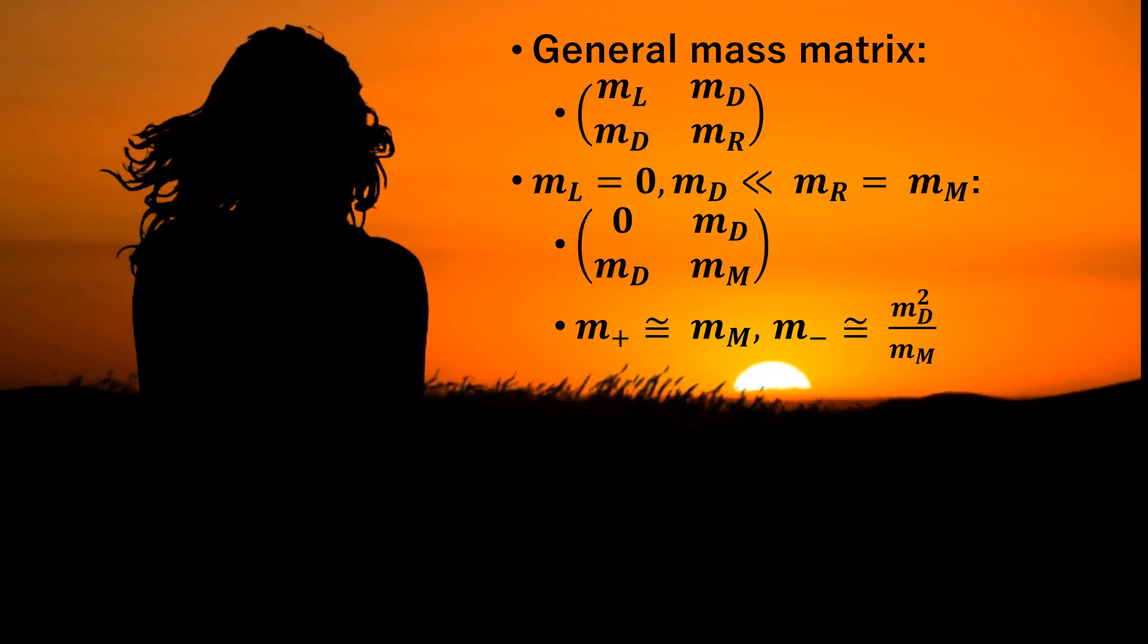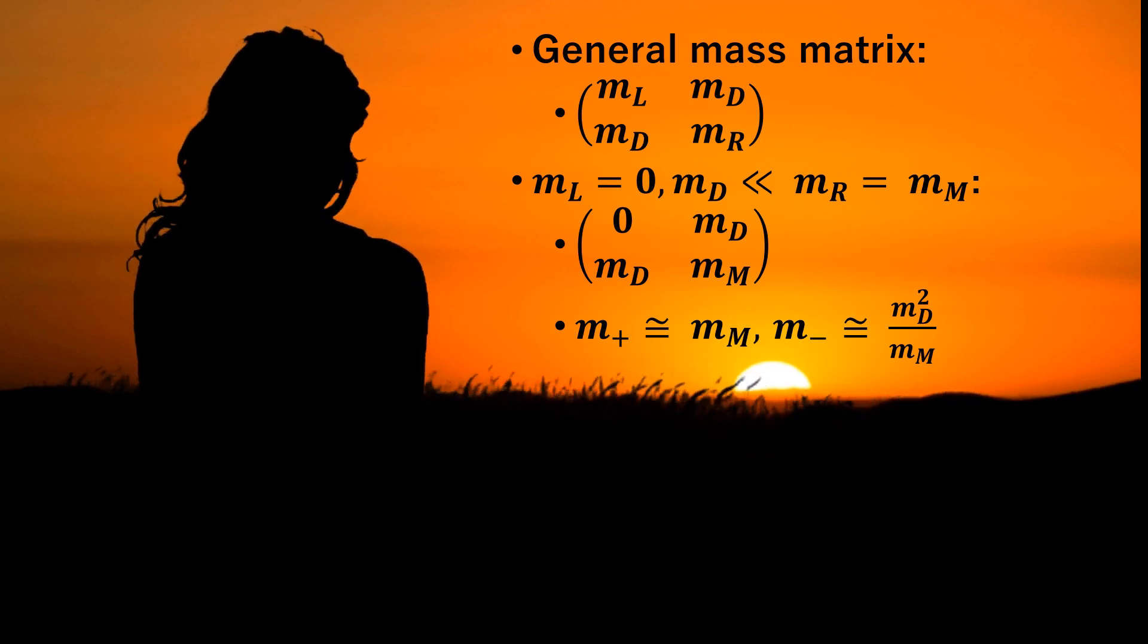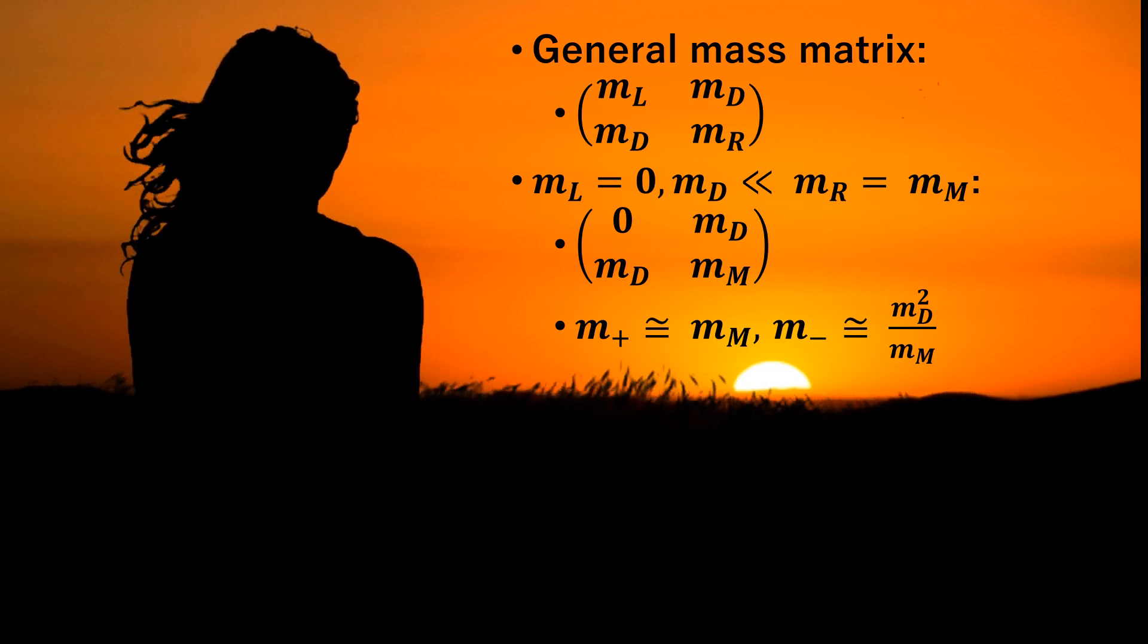The most general mass term in the presence of both right-handed and left-handed neutrinos can be expressed in the form of a two-by-two matrix, where MD is the Dirac mass, and ML and MR are Majorana masses of left-handed and right-handed neutrinos.